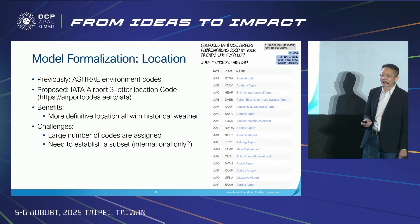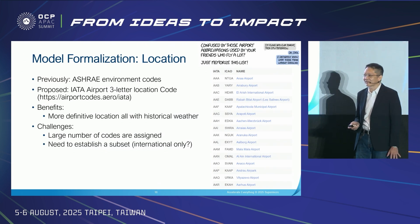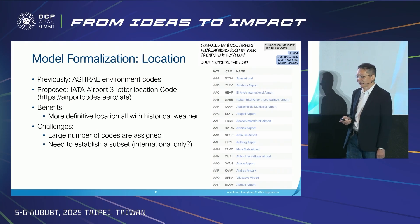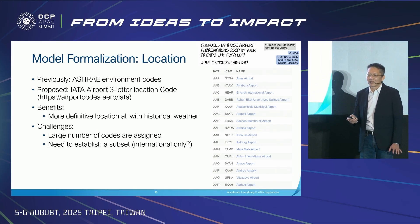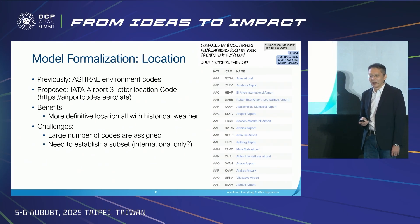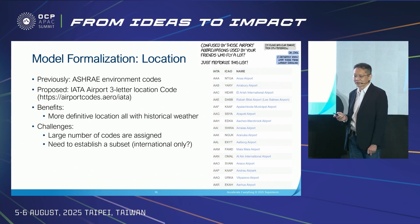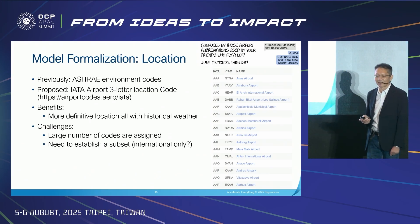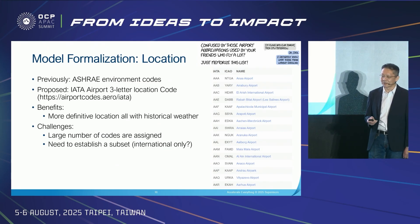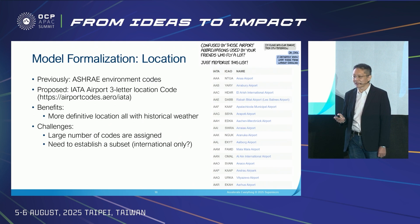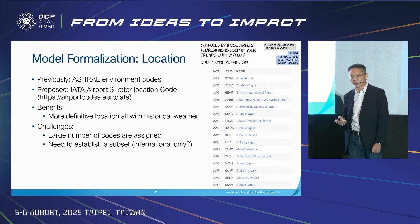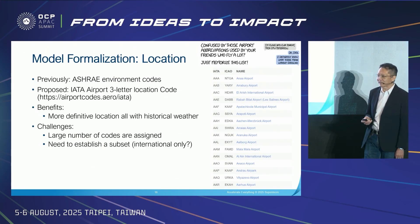Currently, we rely on ASHRAE environmental zones, which comprise 19 distinct climate zones. However, this approach lacks sufficient granularity. Chiller and economizer performance can vary significantly even within the same climate zone. To improve the accuracy of mechanical energy modeling, we plan to compile climate data from all airport weather stations, as these locations consistently maintain meteorological monitoring equipment. Users will be able to select the nearest airport to simulate conditions of a specific data center location.